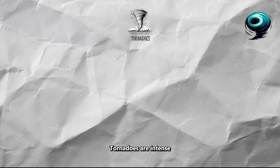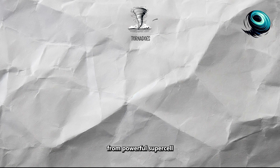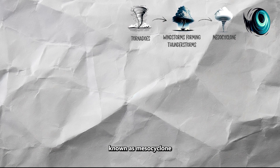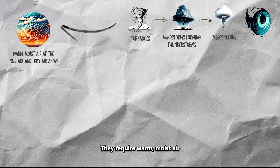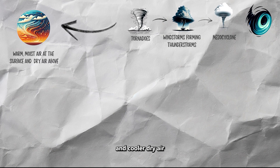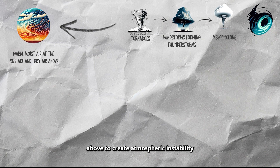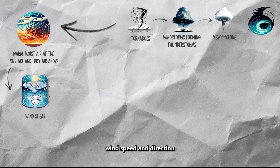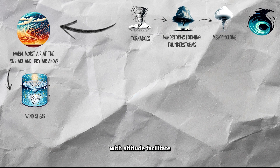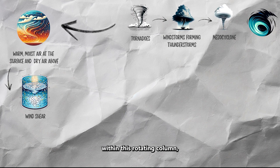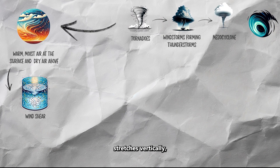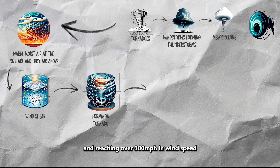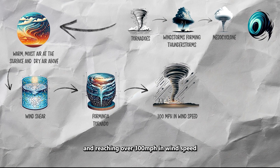Tornadoes are intense wind storms forming from powerful supercell thunderstorms with a rotating updraft known as a mesocyclone. They require warm, moist air at the surface and cooler dry air above to create atmospheric instability. Wind shear, involving changes in wind speed and direction with altitude, facilitates the mesocyclone's rotation. When this rotating column stretches vertically and touches the ground, it forms a tornado capable of traveling miles and reaching over 300 miles per hour in wind speed.